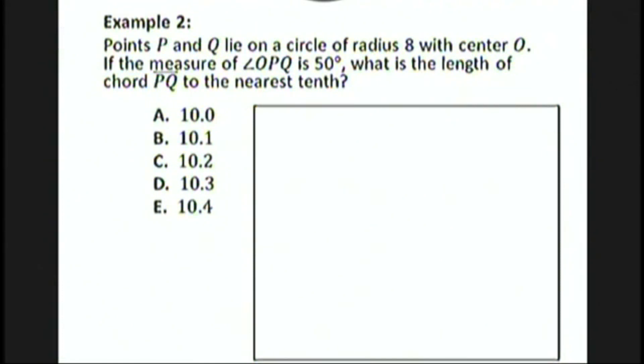Let's try a harder example where the law of sines can be used. Points P and Q lie on a circle of radius 8 with center O. So let's put point P here, point Q here. The radius is 8, so both of those segments are 8. If the measure of angle OPQ is 50 degrees,